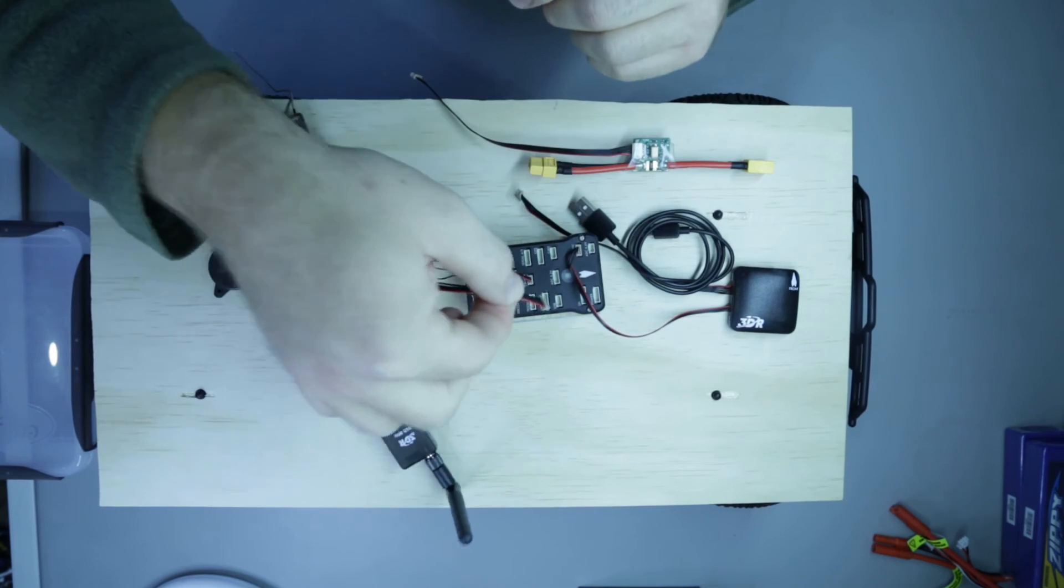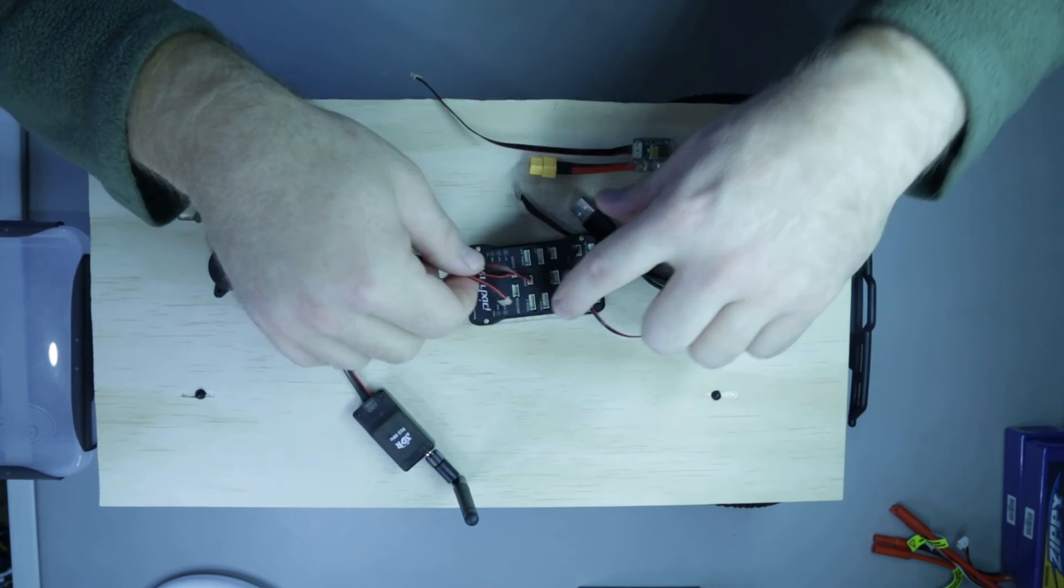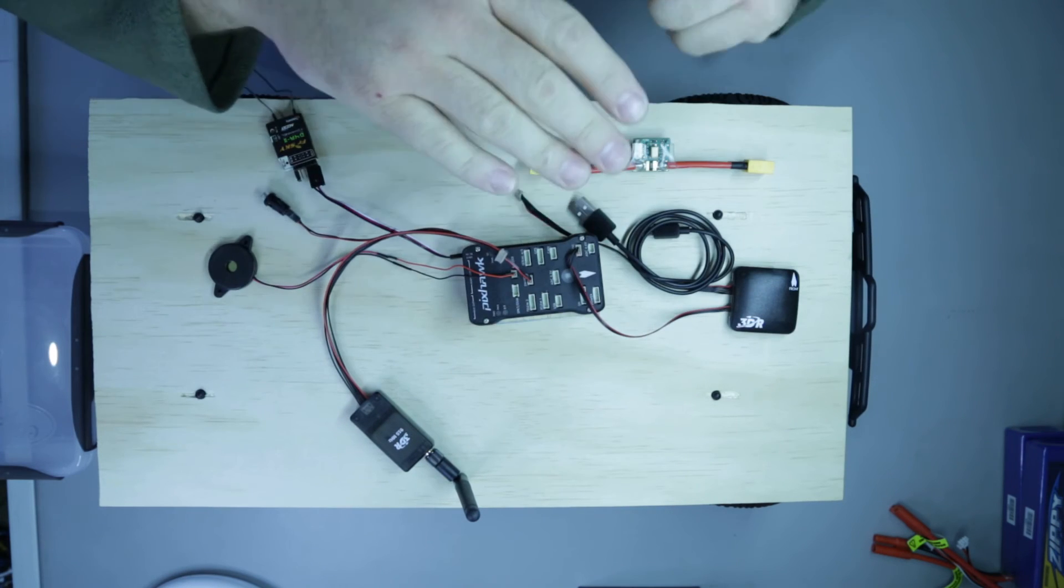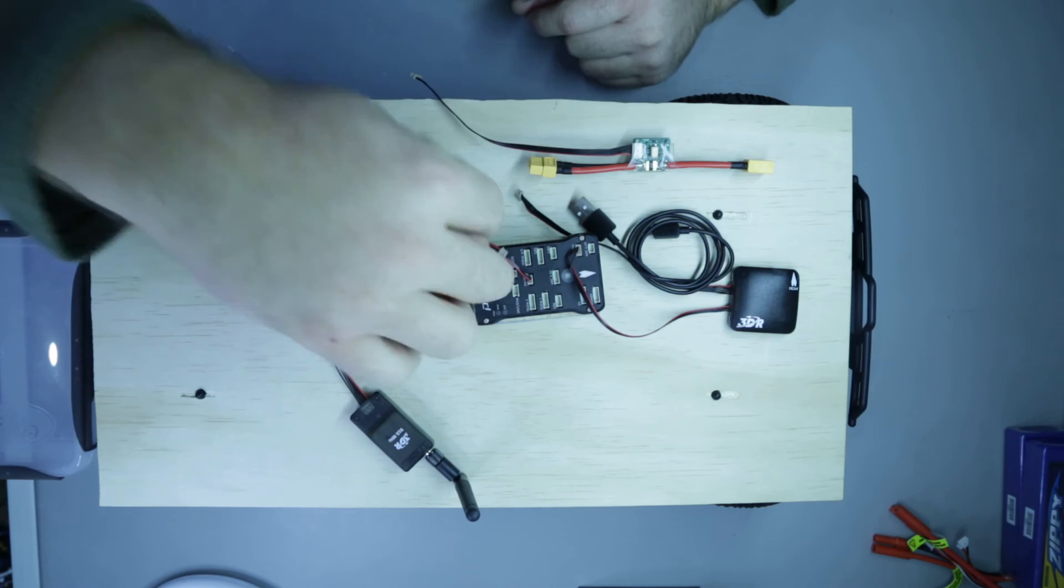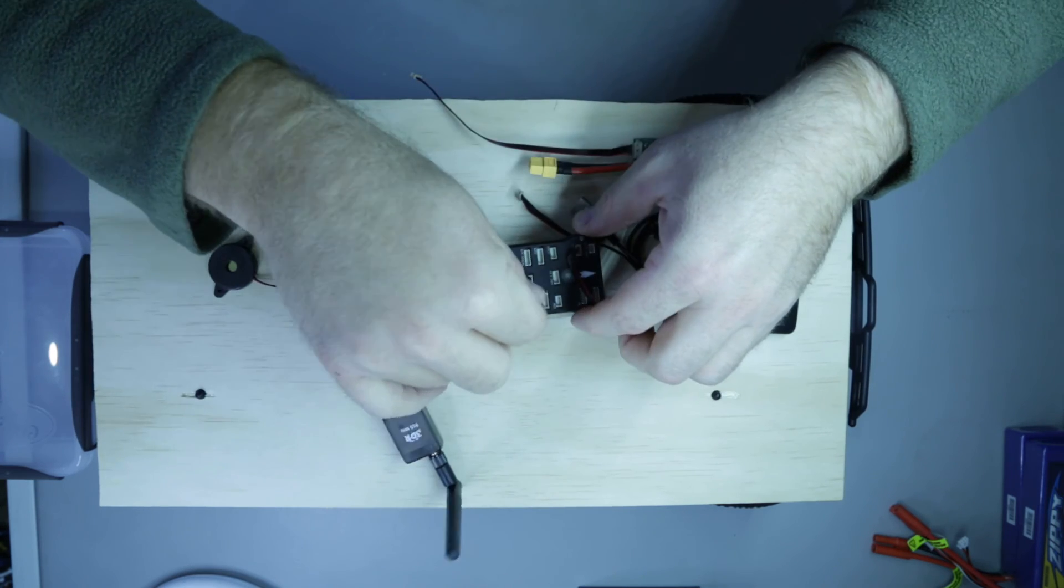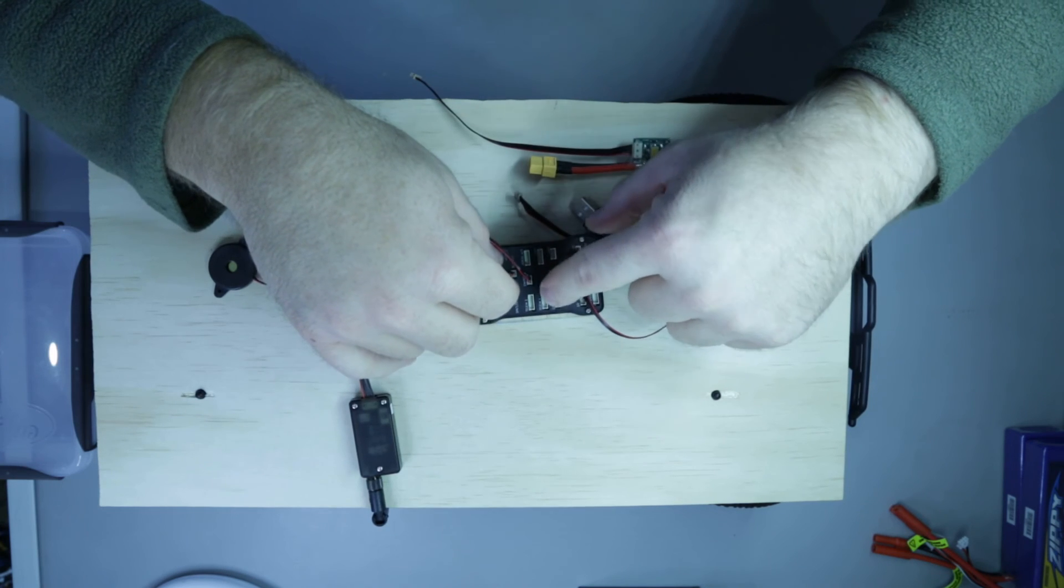You definitely don't want to pull on the cable to rip it out because these sockets are only surface mounted on top of the printed circuit board. They're not pins through the board, just surface mounted on the top. If you pull on this cable, you'll actually lift that socket off the board and lift the tracks off the board as well.